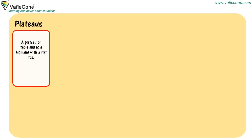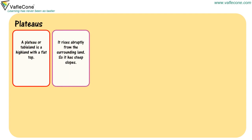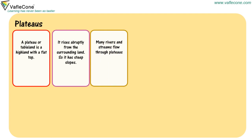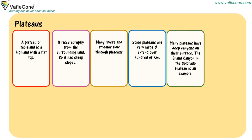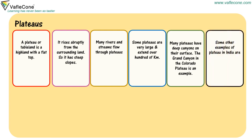Plateaus. A plateau, or tableland, is a highland with a flat top. It rises abruptly from the surrounding land, so it has steep slopes. Many rivers and streams flow through plateaus. Some plateaus are very large and extend over hundreds of kilometers. Many plateaus have deep canyons on their surface. The Grand Canyon in the Colorado Plateau is an example.